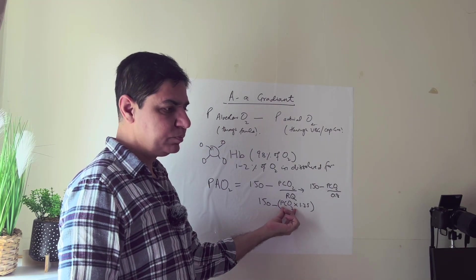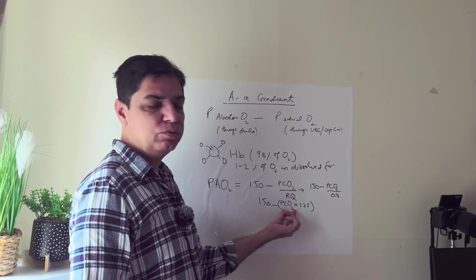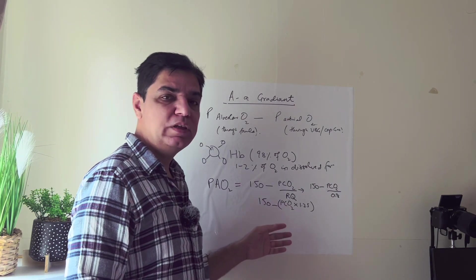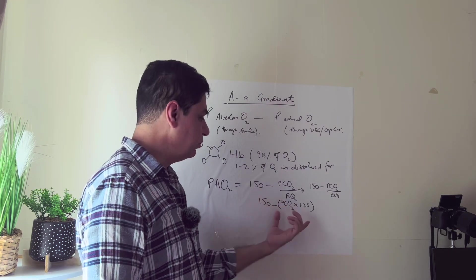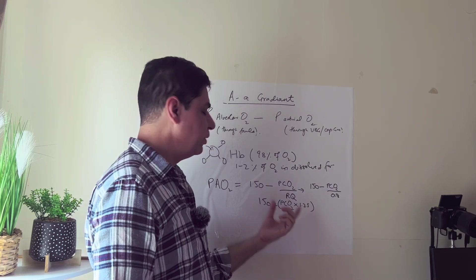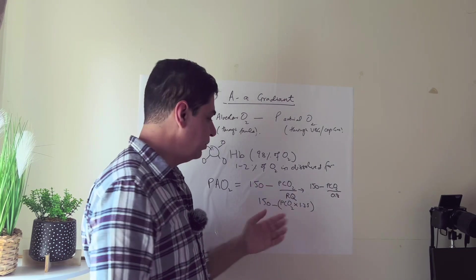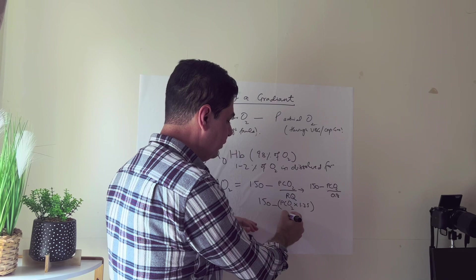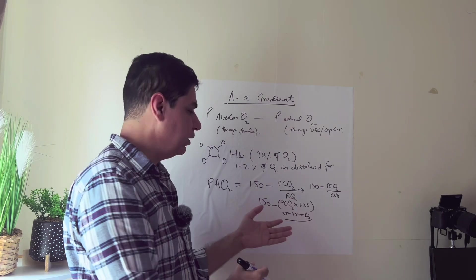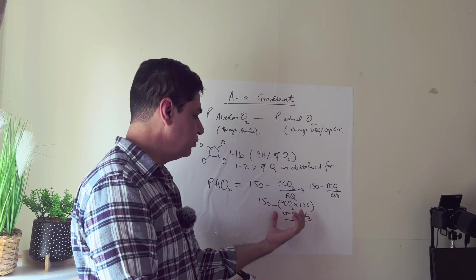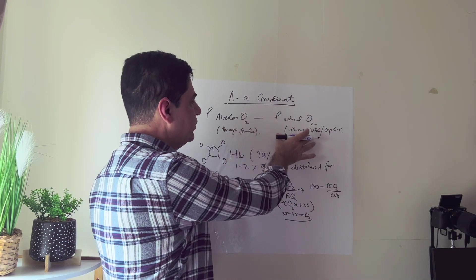The PCO2 is taken from your capgas strip. Normal values are 35 to 45 mmHg. In the British system, kPa is used, but remember kPa must be converted to mmHg because this equation does not accept kPa values. Whatever value you get on your capgas, input it into the formula — 150 minus PCO2 — to get your PAO2.